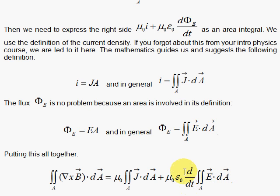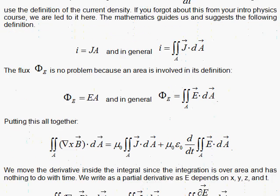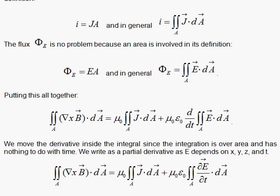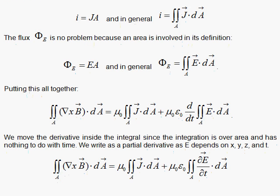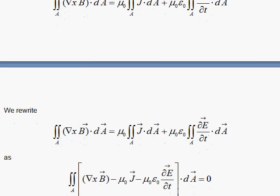And the next step will be to move the derivative inside, since this is an integration over space, and this is the derivative with respect to time. So we move that in. There's a partial derivative, since there are other variables floating around here. And that brings us to the last step.